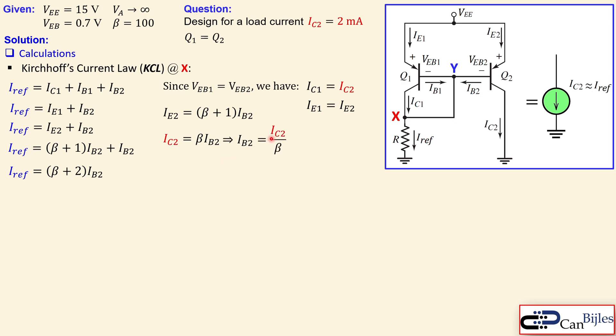Rewrite this as IB2 is equal to collector current divided by the beta. Substitute that in here, in our final formula, you get this expression. Now we have an expression which relates the IRF to IC2 by this formula. Now we can see that.